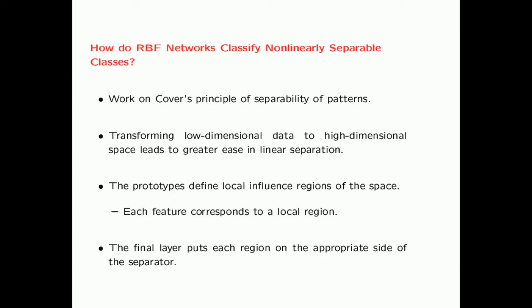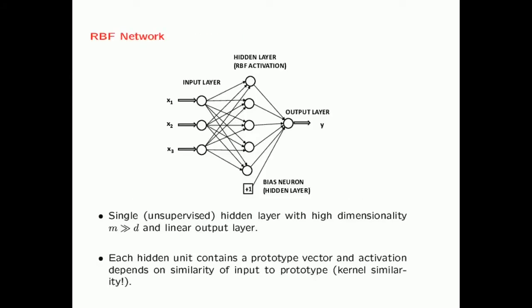So how do RBF networks classify non-linearly separable classes? These methods essentially work with Covert's principle of separability of patterns. The idea is that if you transform low-dimensional data to a high-dimensional space, it leads to greater ease in linear separation. The dimensionality of the hidden layer is higher than that of the input layer, so you have transformed the inputs to a new space with much higher dimensionality — very similar to what kernel SVMs do. Then a simple linear separator is applied based on the weights in the output layer.